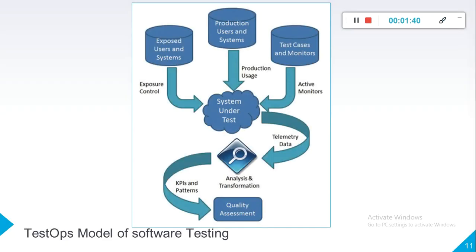The TestOps model says that instead of just assessing the quality of a product on the basis of test pass or fail, we identify KPIs and patterns and define them for our application. On the basis of these KPIs and patterns, we assess the quality of our product.